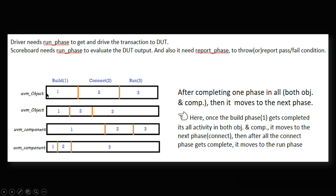The execution order works as follows: the build phase must complete before moving to connect phase — that is the top-down approach. Once build is complete, connect phase runs. Then end of elaboration and start of simulation follow sequentially. Once the run phase starts, all components execute in parallel. After run phase completes, post-run phases execute.